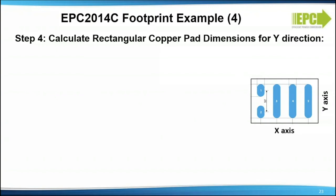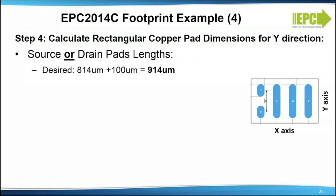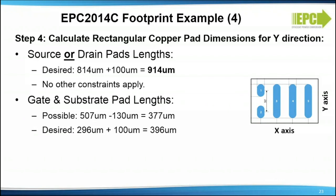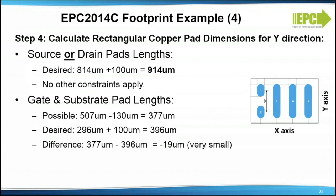Step 4: calculate rectangular copper pad dimensions for the y-direction. For the source or drain pad length, the desired size is 914 micrometers — no other constraints apply. For the gate and substrate pad lengths, the maximum pad size is 377 micrometers; the desired pad size is 396 micrometers — the difference is minus 19 micrometers, which is again very small. Since spacing is a higher priority, use 377 micrometers for the pad length.